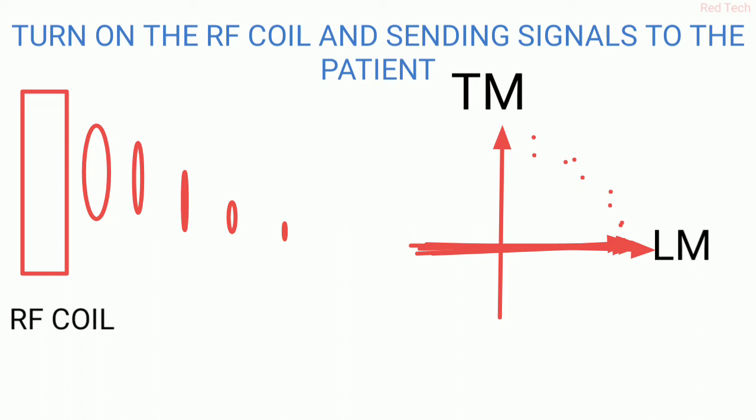This is because of applying an external magnetic field greater than applied earlier when we placed the patient in the MR machine. The RF coil has a greater magnetic field than the earlier one, so our hydrogen protons turn to transverse magnetization.